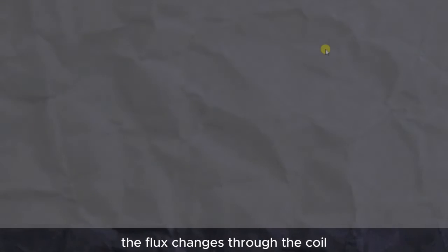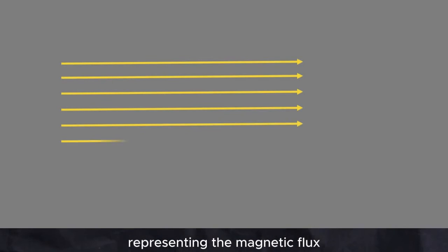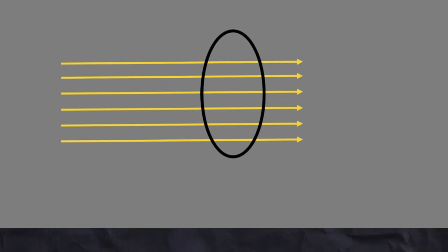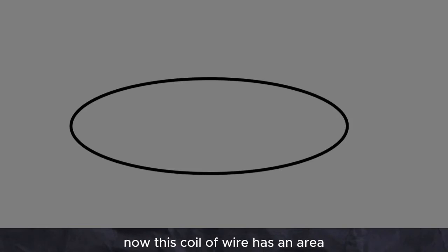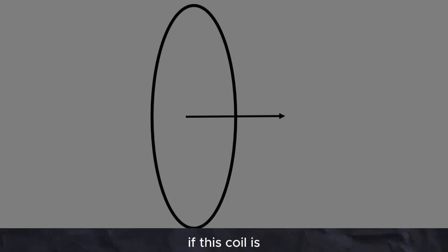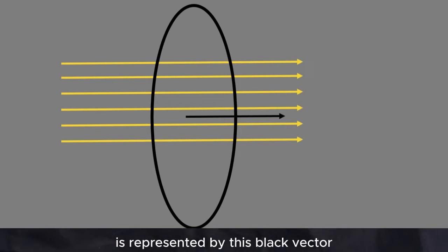So let's have a look at how the flux changes through the coil. Imagine these lines of force representing the magnetic flux that can pass through this coil of wire. If the coil moves, then the flux changes. Now this coil of wire has an area, and we can represent the area of the coil by drawing a vector.